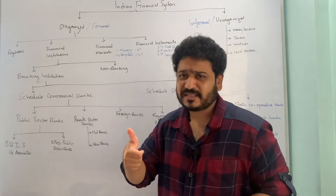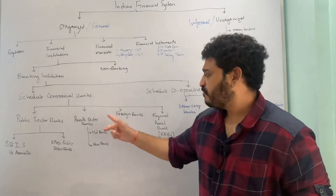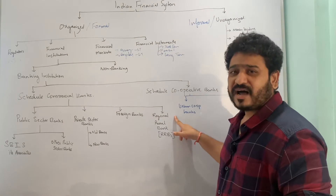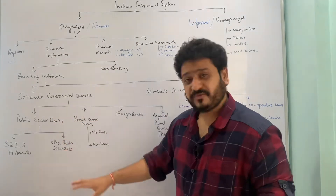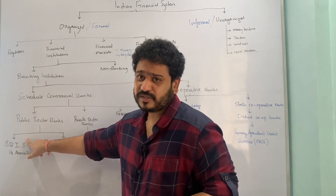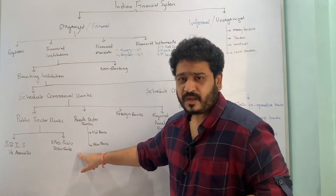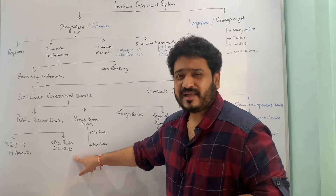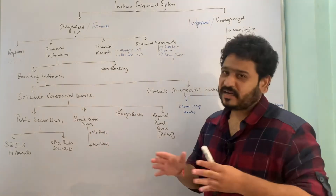Scheduled commercial banks are further classified as public sector banks, private sector banks, foreign banks, and regional rural banks, popularly known as RRBs. Public sector banks are further reclassified into the State Bank of India and its associates, and other public sector banks like Bank of Baroda and Union Bank of India. Private sector banks are further classified into old banks and new banks.